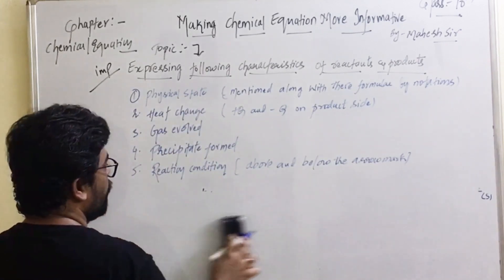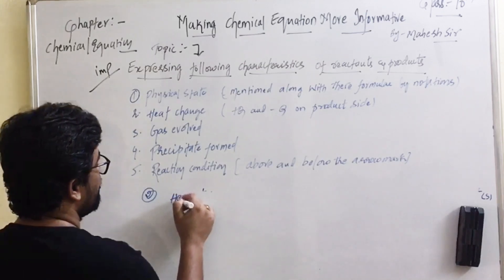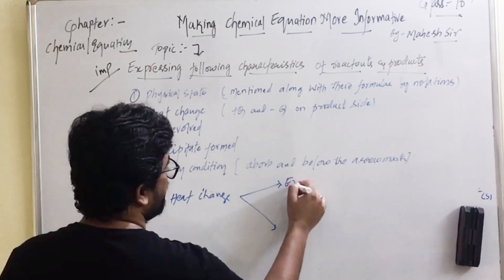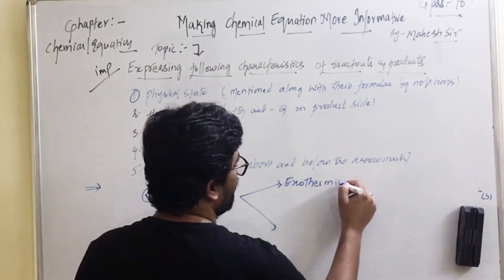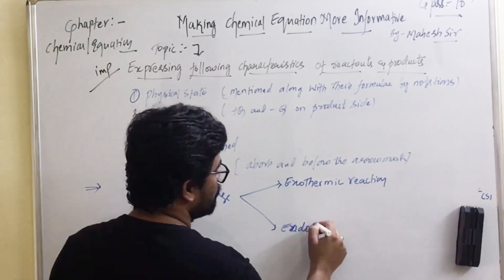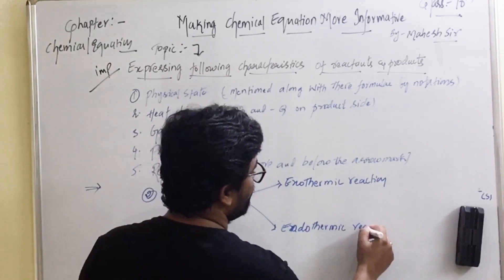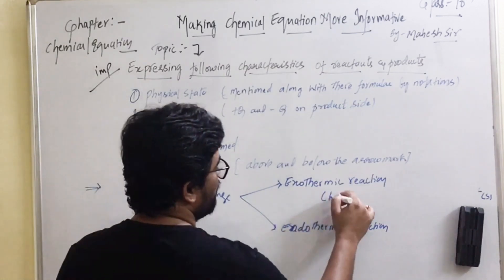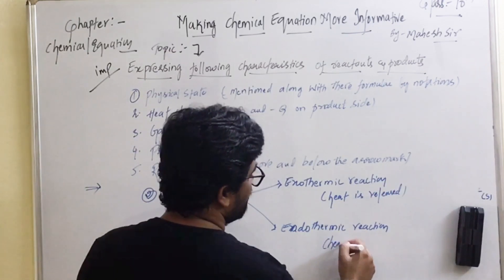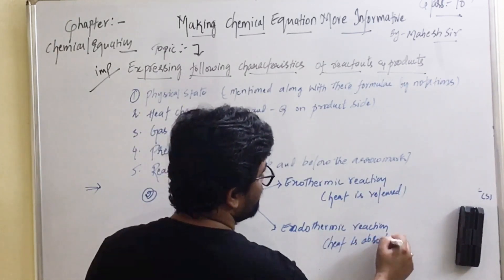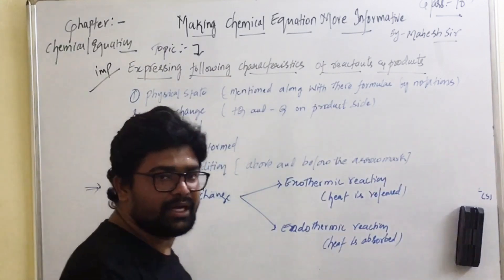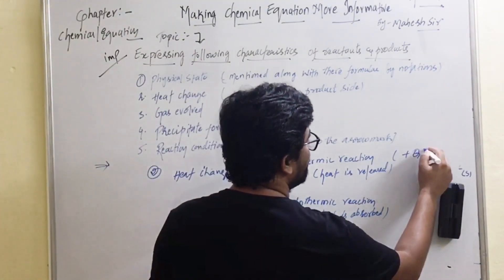The next characteristic is expressing heat change. Heat change reactions are of two types: exothermic and endothermic. Exothermic reactions are those in which heat is generated or released, while in endothermic reactions heat is absorbed. These reactions are represented as follows: if it is an exothermic reaction, we represent it with plus Q.